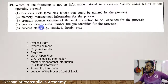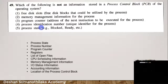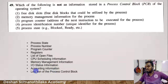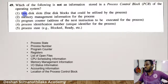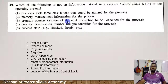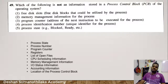Which of the following is not information stored in the Process Control Block (PCB)? The PCB stores: process state, process number, program counter, registers, list of open files, CPU scheduling information, memory management information, accounting information. A free disk slot is not stored in the PCB — that is the answer.